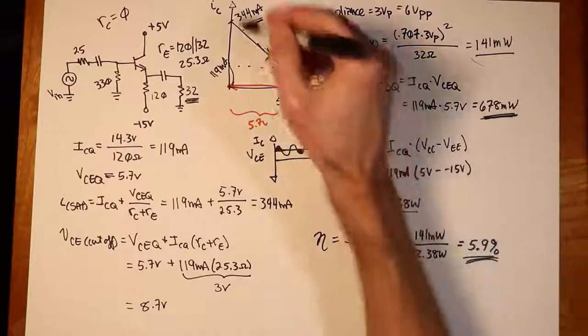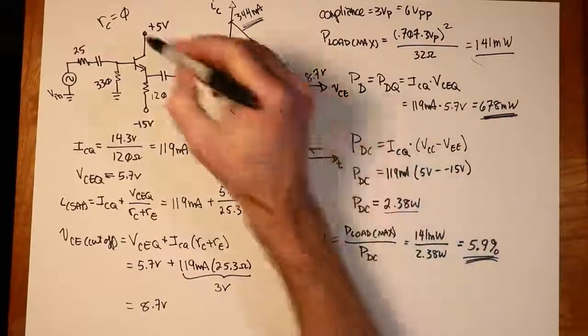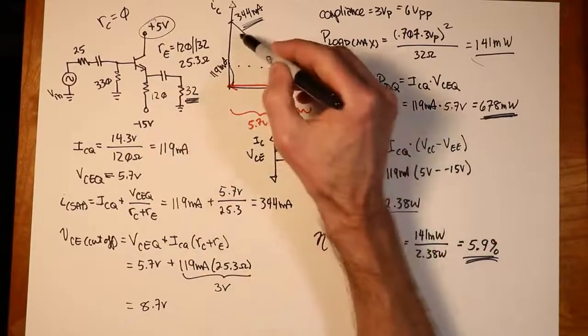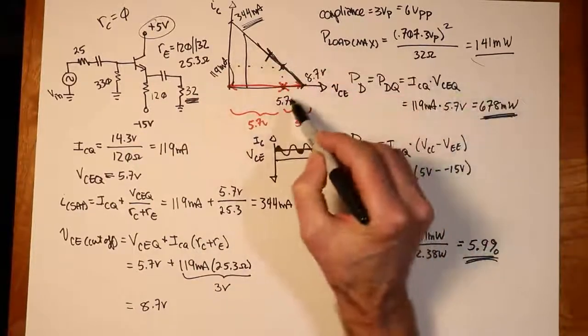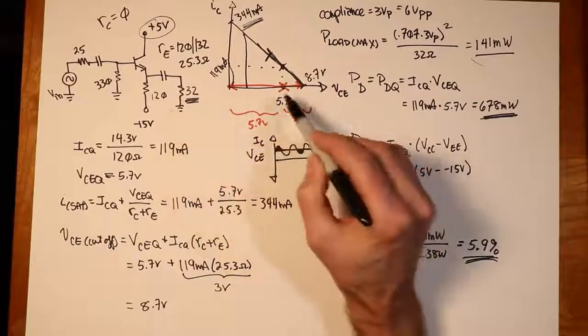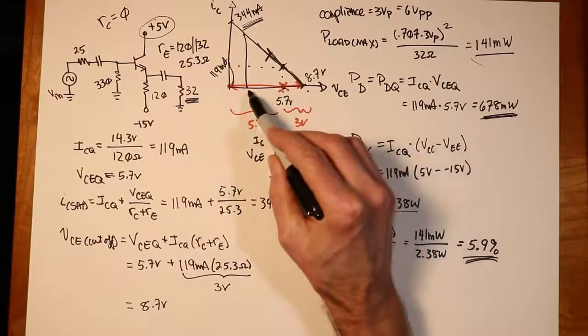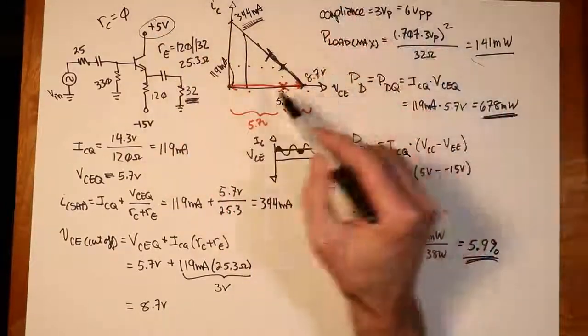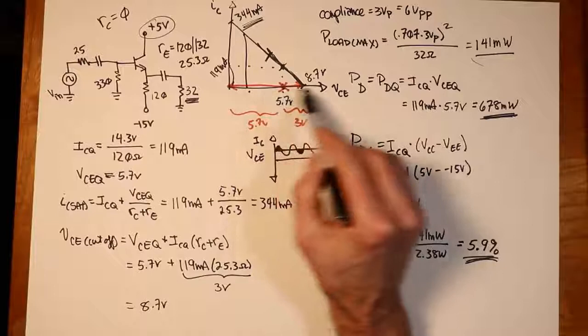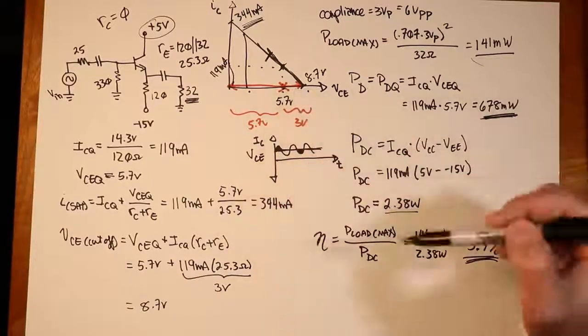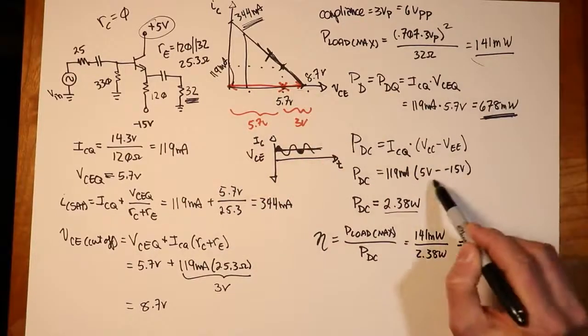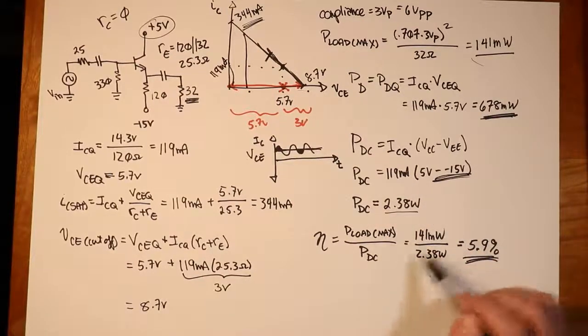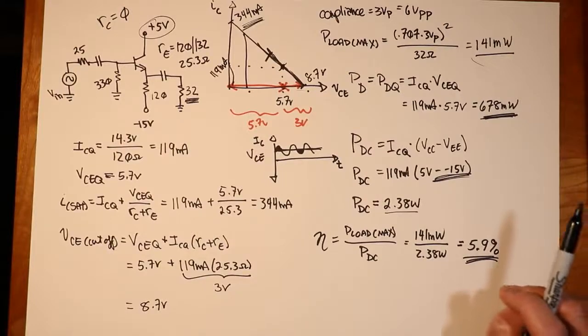The other thing you could do would be to shrink the far side of it. In other words, you could actually reduce that power supply a little bit, and that would sort of bring the line over here. Why swing down 5.7 if you can only swing up 3? Well, I'll just swing down 3. So if this was like a 2.5 volt power supply, we could still get the same result as far as the swing here, but the total voltage that we're applying would be reduced a little bit, and that would reduce the PDC, and reducing the PDC would increase our efficiency.